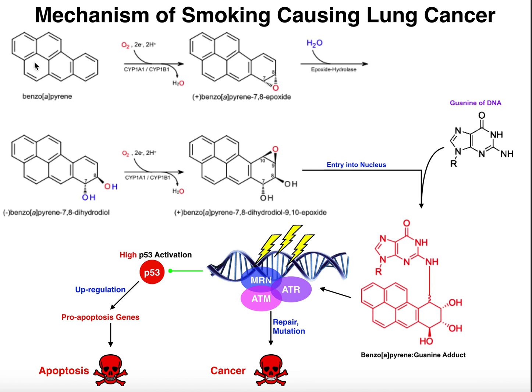Benzopyrene is what we call a polycyclic aromatic hydrocarbon. The reason it's called that is it's a hydrocarbon because it contains nothing but carbon and hydrogen. It's aromatic, but there are many connected aromatic rings, so it's polycyclic. There are also other examples of polycyclic aromatic hydrocarbons found in all sorts of things like cigarettes or even car exhaust.